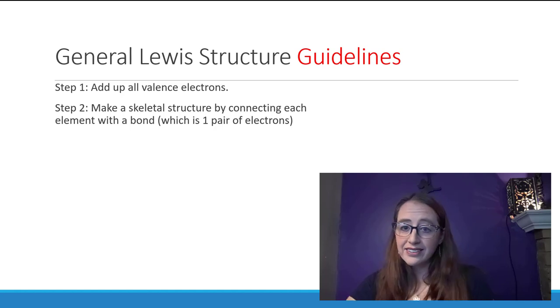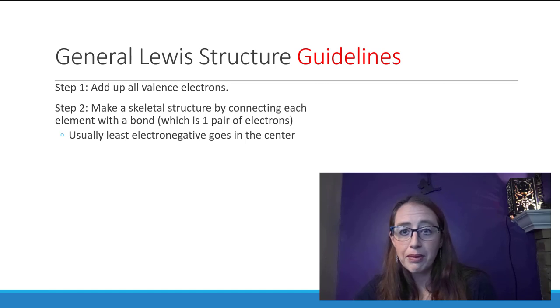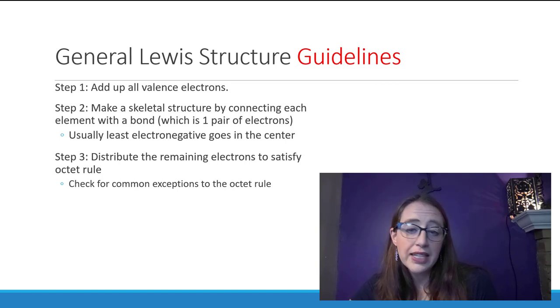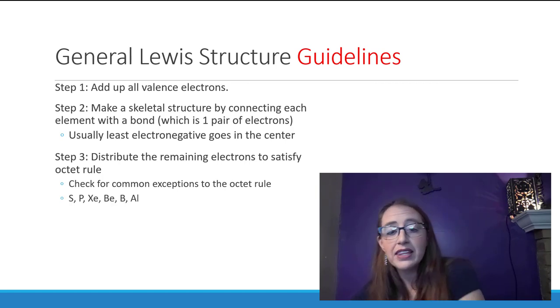If you have enough to complete all your octets, then great. Though often you won't have enough to do that. When this happens, you'll need to add some double or triple bonds. This means that the atoms will share more electrons, being able to complete their octets. For every two electrons that you're short, you'll need to add one more bond to the structure.